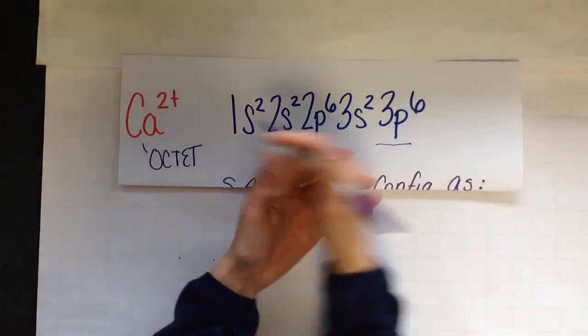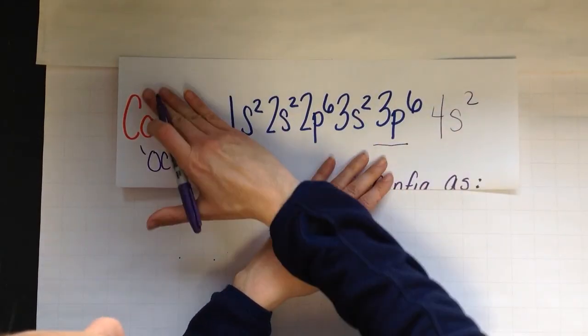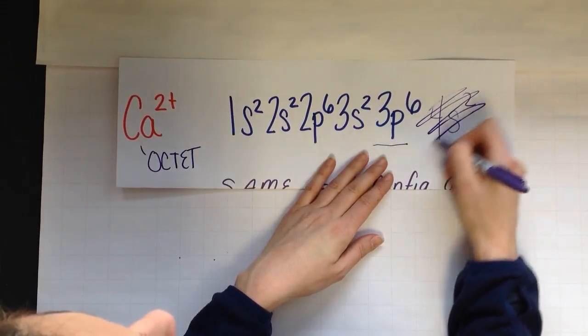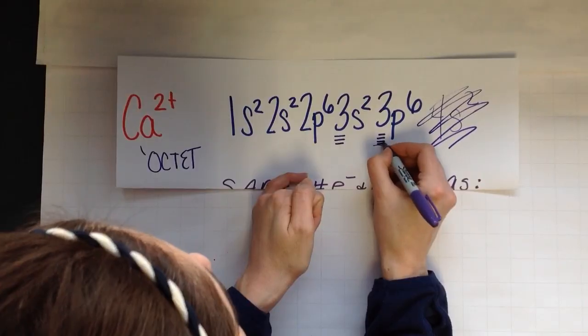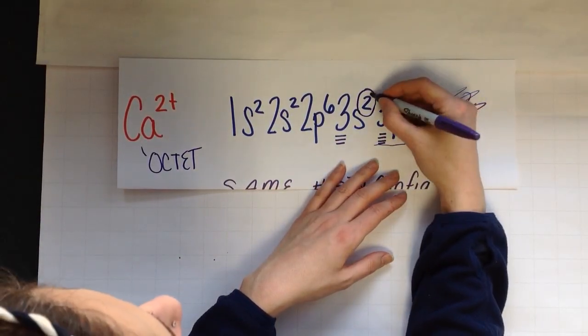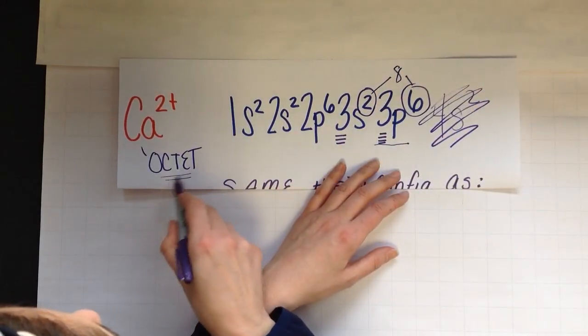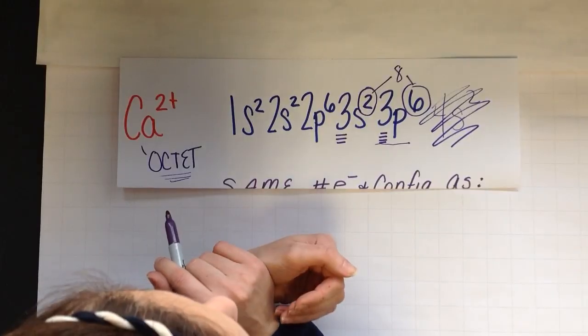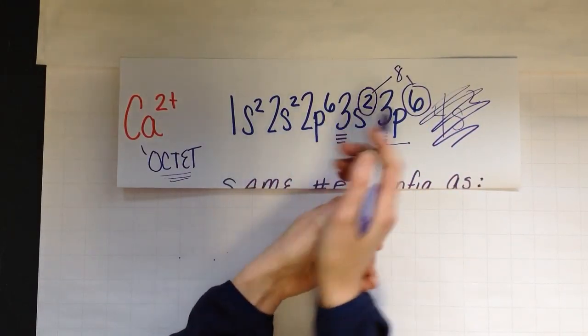When it lost the 4s2, remember there was a 4s2 here when it was just calcium. When it lost that, it now has 3 as its highest energy level. And the electrons found now in its new outermost energy level add up to 8. It is now fulfilling the octet rule. It is more stable like this. That is why it chose to lose electrons.